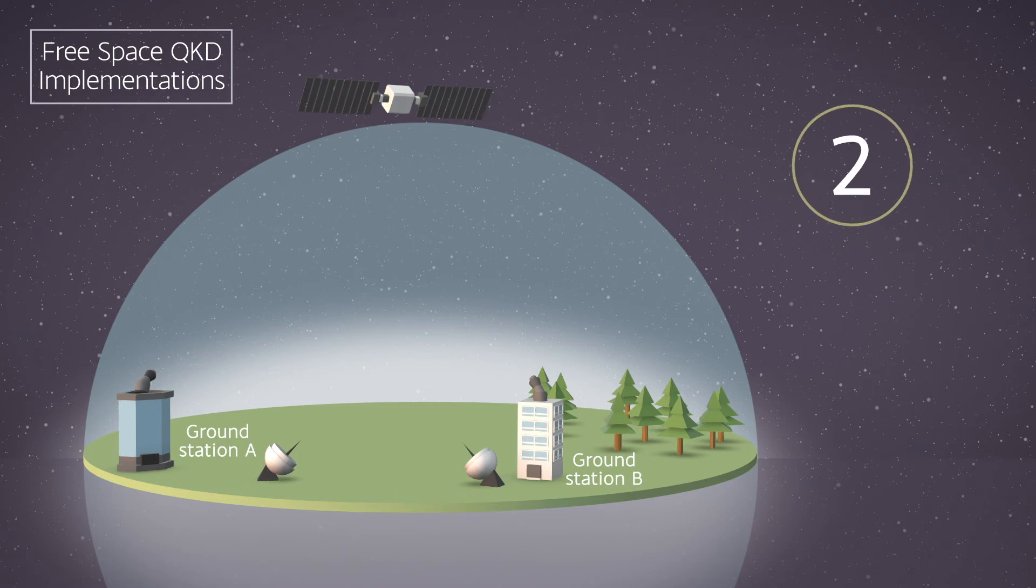Two: The same haps then performs QKD with a second independent optical ground station, sharing key B.